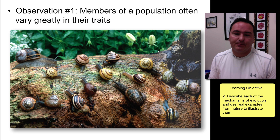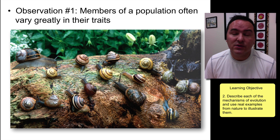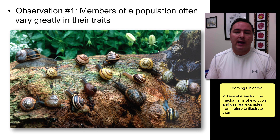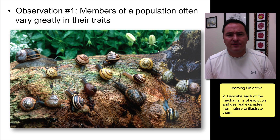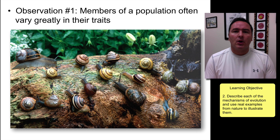First, natural selection. How did natural selection come about? Well, of course, this is the idea of Charles Darwin, and we should also remember that Wallace came up with this idea independently of Charles Darwin. Both of them basically relied upon four observations that brought them to the conclusion of natural selection. The first observation was that individuals of populations have characteristics, and they vary in these characteristics.